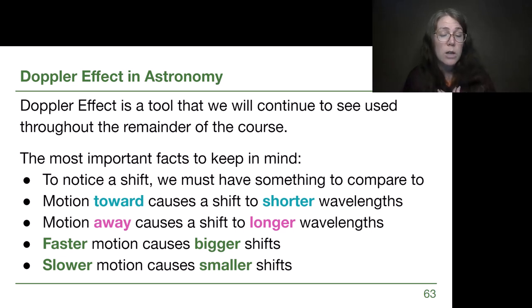Motion towards us causes a shift to shorter wavelengths. I've color-coded that slightly blue because that is blue shifted. Motion away from us causes a shift to longer wavelengths. I've colored that pinkish red because that is a red shift. And then as a separate pair of facts, if we are going fast, we see a big change, and if we are going slow, we see a small change.